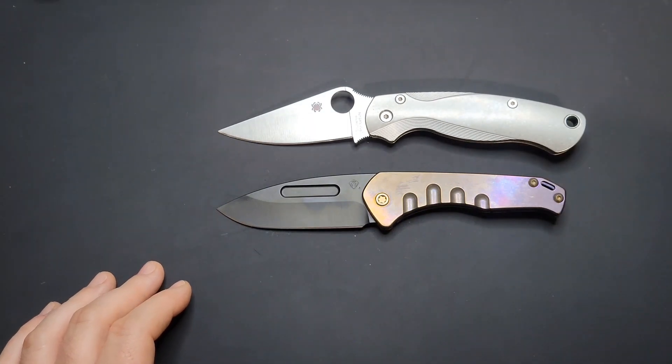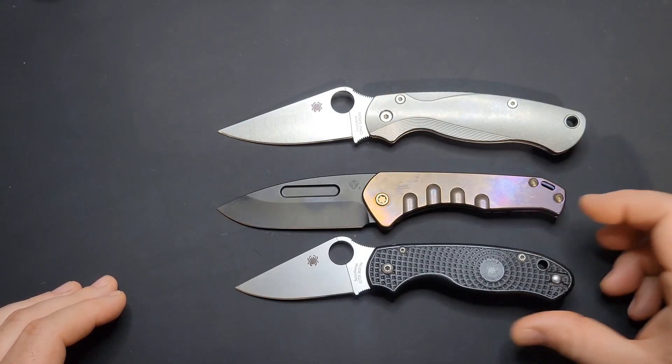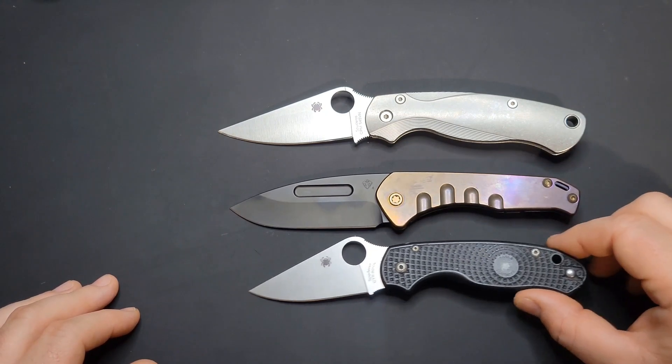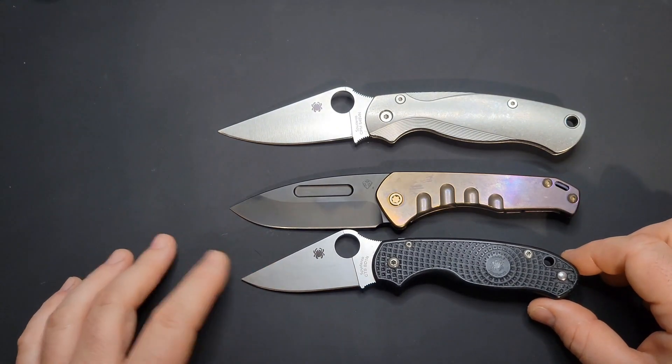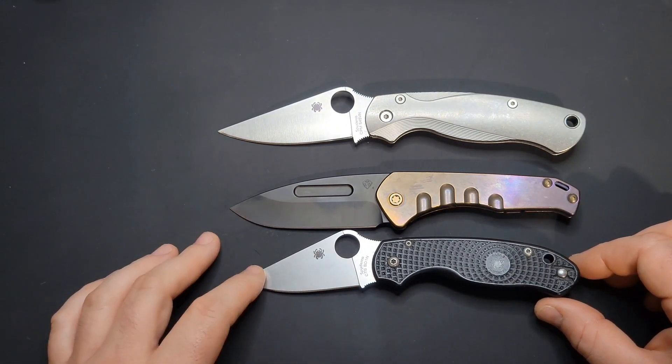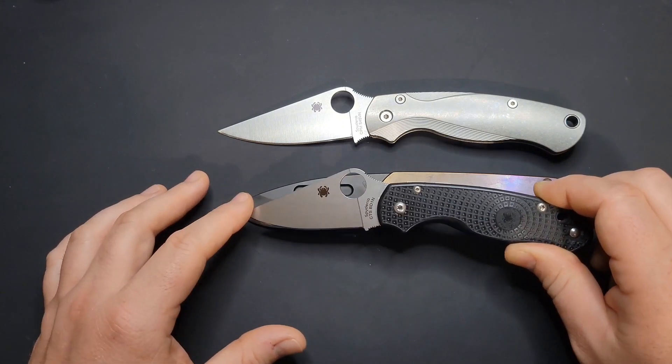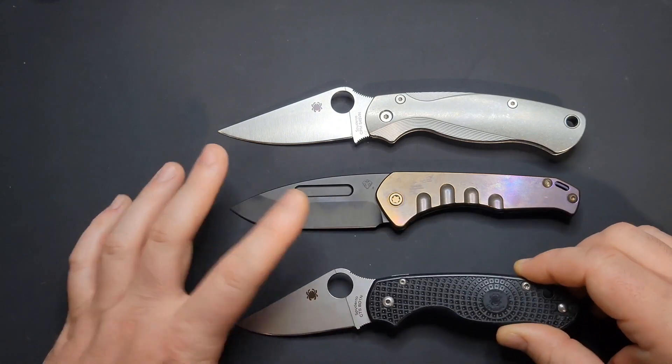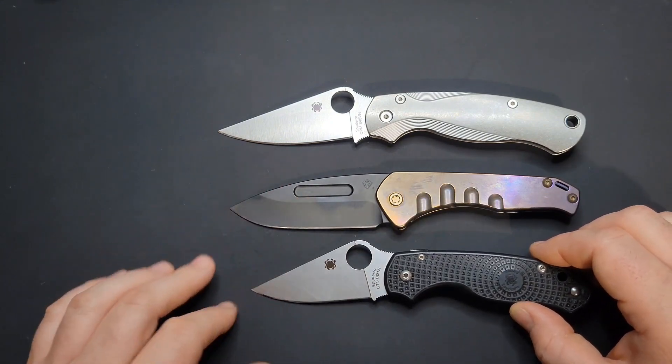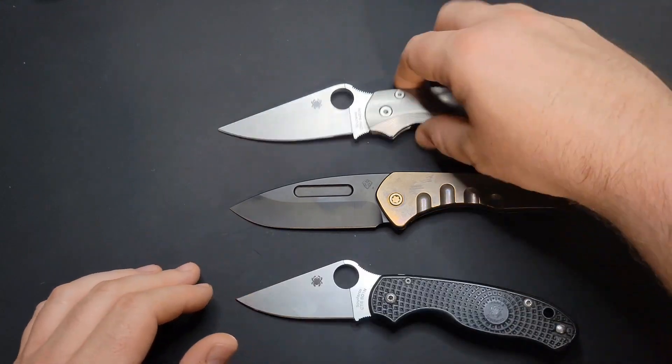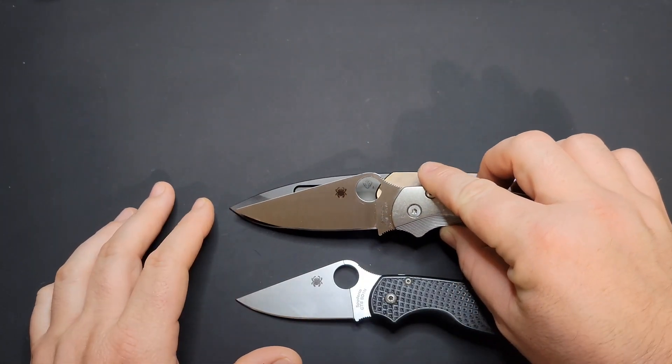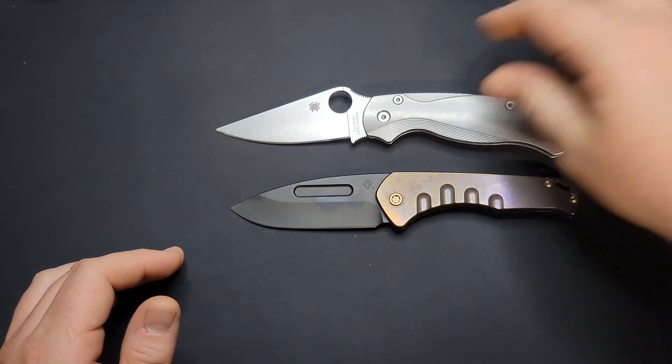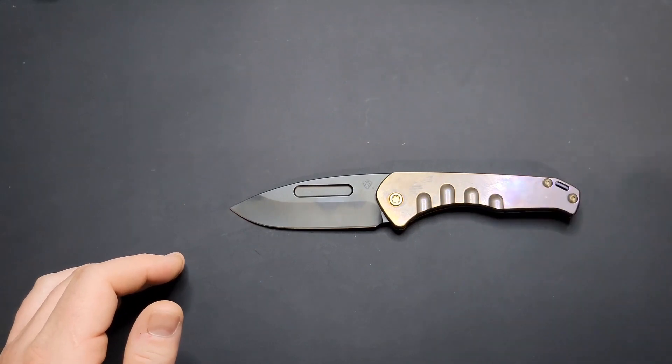Last but not least, we got the Spyderco Paramilitary 2 and the Spyderco Para 3. Definitely shorter than the Paramilitary 2, especially if you go by overall length. Right around the same size as the Para 3, maybe a little longer. Cutting edge definitely has the Para 3 beat. Actually, the cutting edge on the Medford is longer than the whole blade on the Para 3. As far as cutting edge goes, it's got the Paramilitary 2 beat also. So definitely utilizes the space that it's got, I'd say.